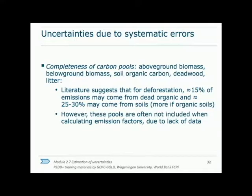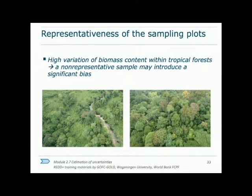Moving to systematic errors: it is often very difficult to give an accurate measure of the total carbon pool, since in many cases above-ground biomass is easiest to measure but only contains a relatively small proportion of the total carbon. This will lead to a bias in underestimating the carbon pool. Below-ground biomass, soil organic carbon, deadwood, and litter can be estimated based on above-ground biomass but often with higher uncertainty. Additionally, the areas with the largest biomass variance are often the hardest to access, so systematically sampling easier-to-reach but lower-biomass areas could lead to a bias underrepresenting the total carbon pool.